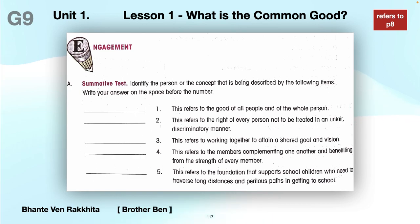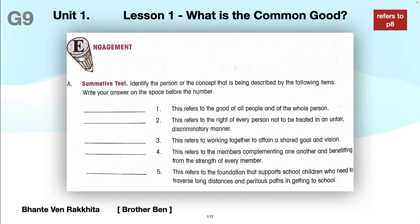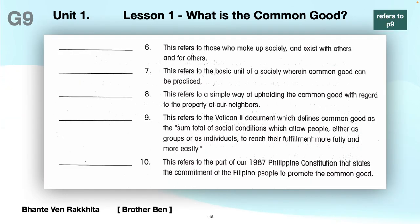Five: this refers to the foundation that supports school children who need to traverse — cross means to cross — long distances and perilous paths in getting to school. You can take a screenshot at this point. I'm going to move on to page nine.